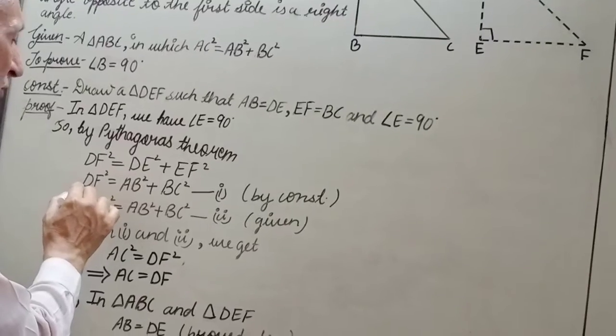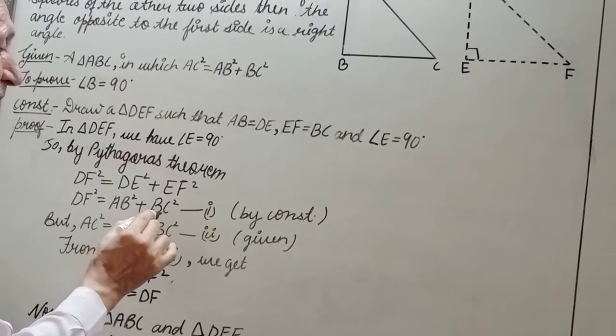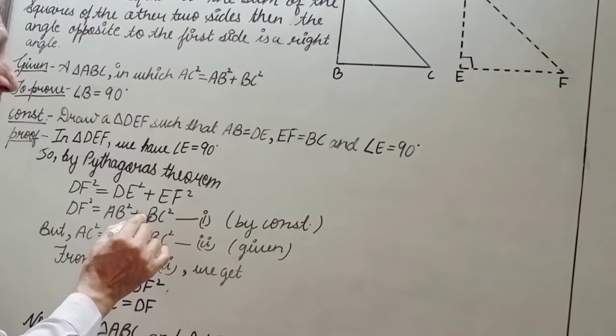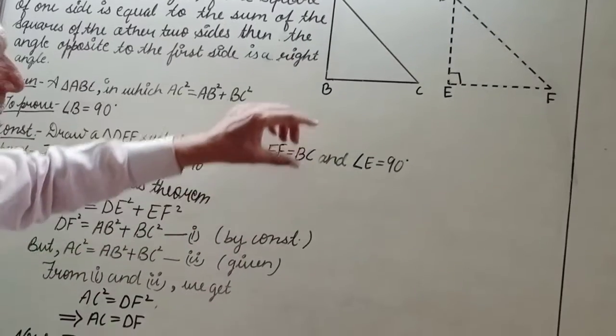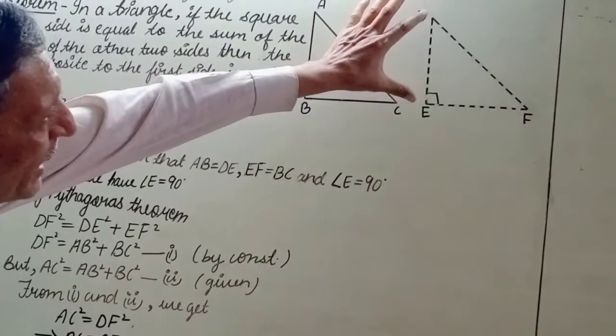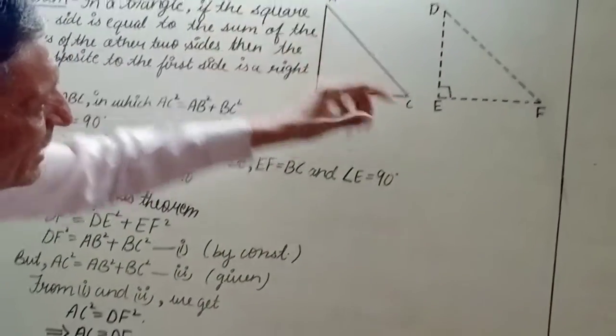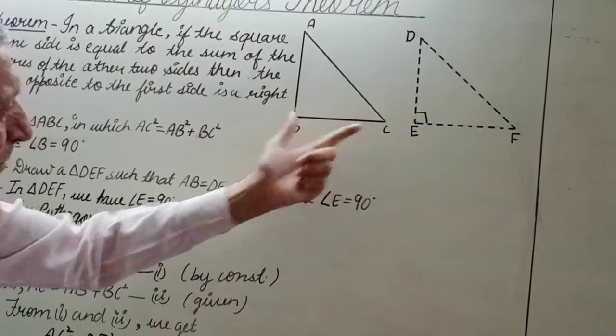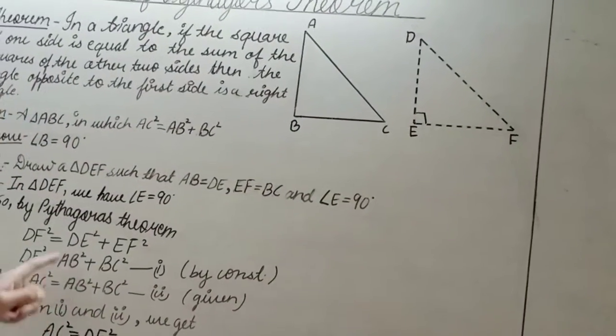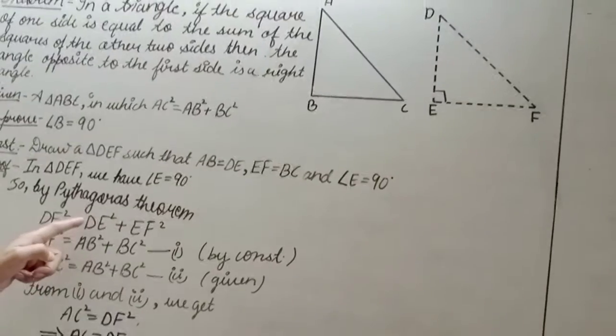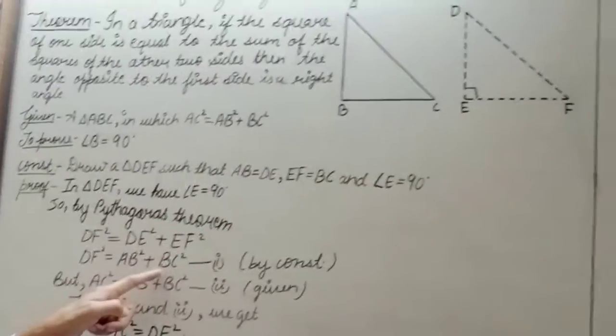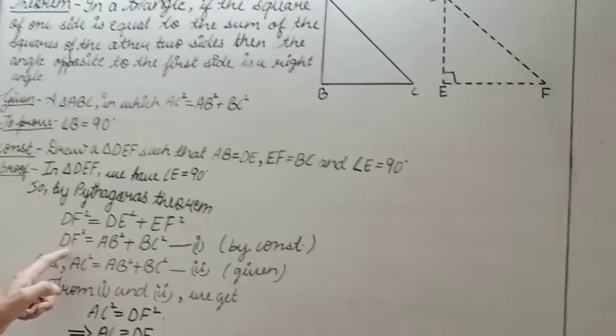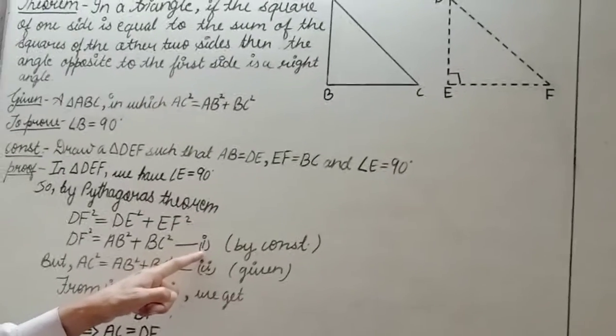Or, DF² = AB² + BC². Because, by construction, we have taken DE = AB and EF = BC. Therefore, we have replaced DE by AB and EF by BC. This becomes our equation number 1.